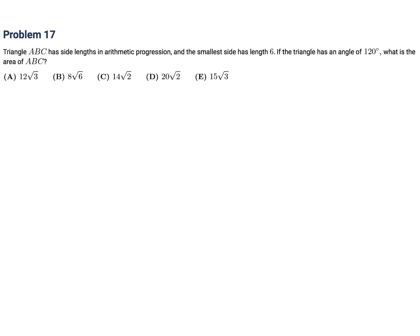Triangle ABC has side lengths in arithmetic progression and the smallest side has length 6. If the triangle has an angle of 120°, what is the area of ABC? The sides are 6, 6 + D, and 6 + 2D. We place the 120° angle between the two smaller sides, 6 and 6 + D.